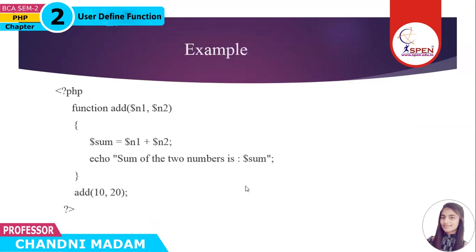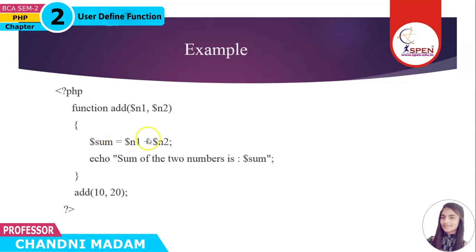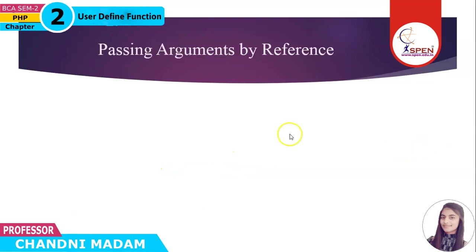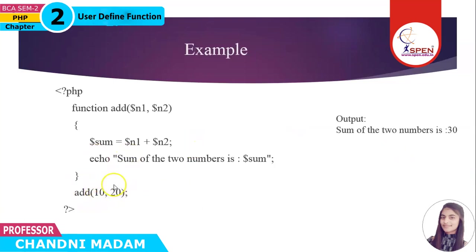Here is the example. This example has two integer parameters and adds them together, then prints the answer. We call a function add and pass two values — first is 10 and second is 20. Whenever this function is called, n1 is 10 and n2 is 20. Sum equals n1 plus n2, and after adding we store the answer in the sum variable and print: sum of two numbers is 30.